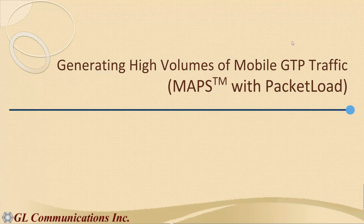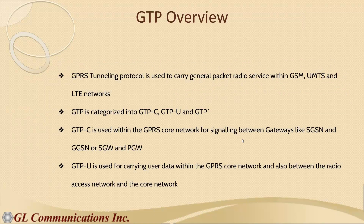GTP stands for GPRS Tunneling Protocol, used to carry general packet radio services within wireless networks such as GSM, UMTS, and LTE. GTP is categorized into three variants: GTP-C (control plane), GTP-U (user plane), and GTP-Prime. In this webinar, we'll concentrate on GTP-U, the user plane. GTP-C is used in the core network for signaling between gateways like SGSN and GGSN, or the Serving Gateway and PDN Gateway, to exchange tunneling information so tunnels can be established to carry user data.